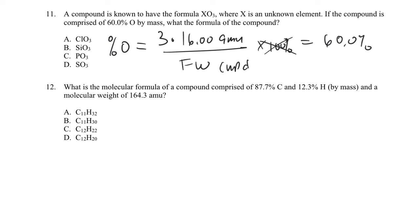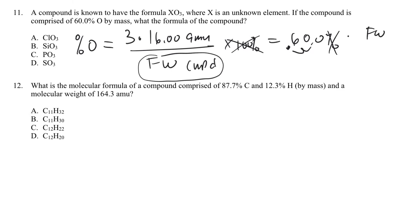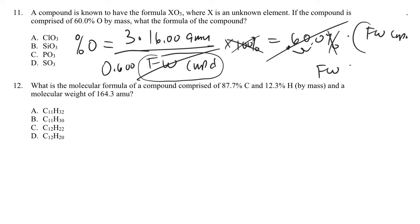Let's get rid of the times 100 and change this to 0.600. So 3 times 16 divided by the formula weight equals 0.6. I can solve for the formula weight of the compound. Taking 3 times 16 and dividing by 0.6 gives me 80.0. So the formula weight of the compound is 80.0 AMU, or grams per mole.